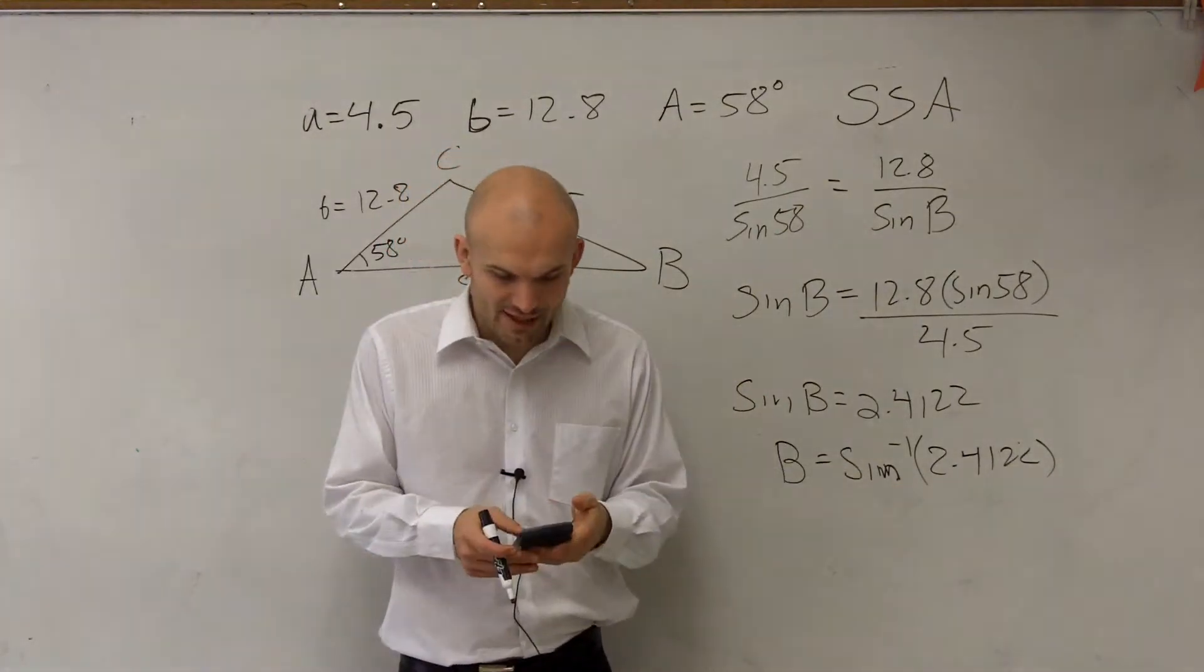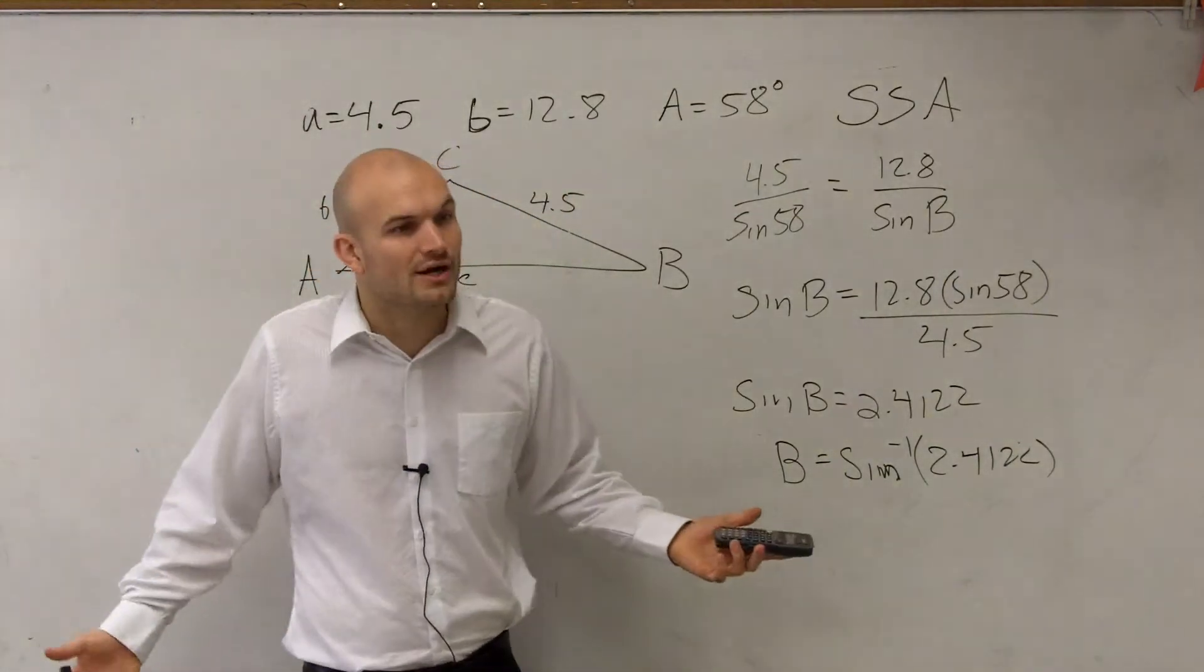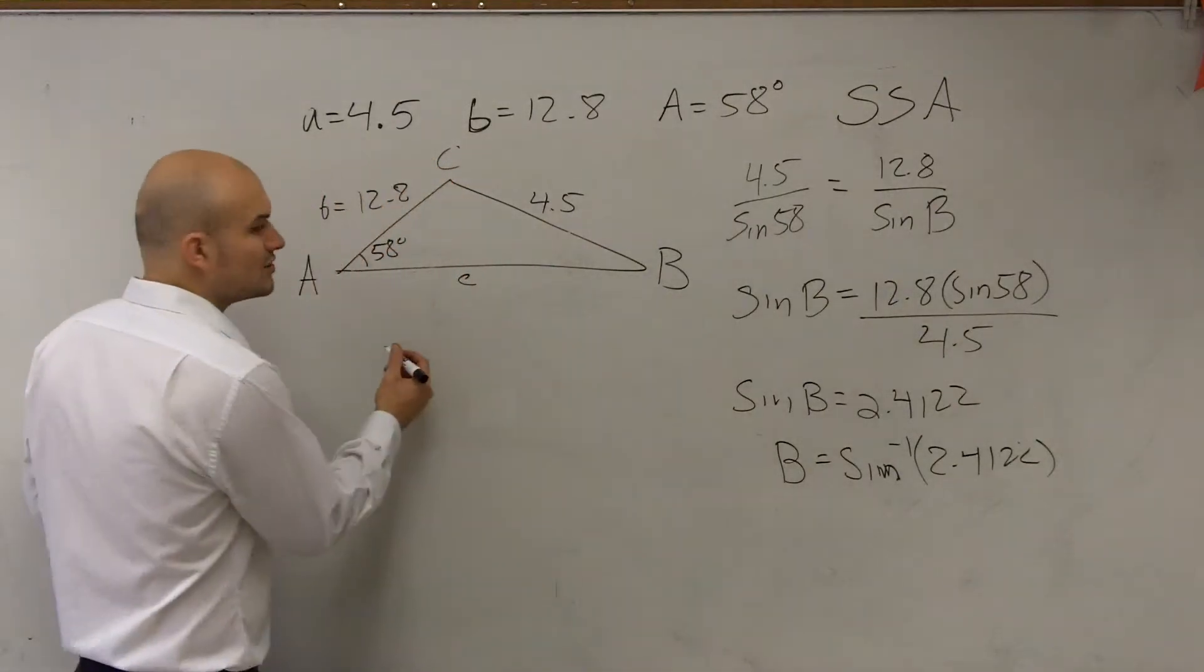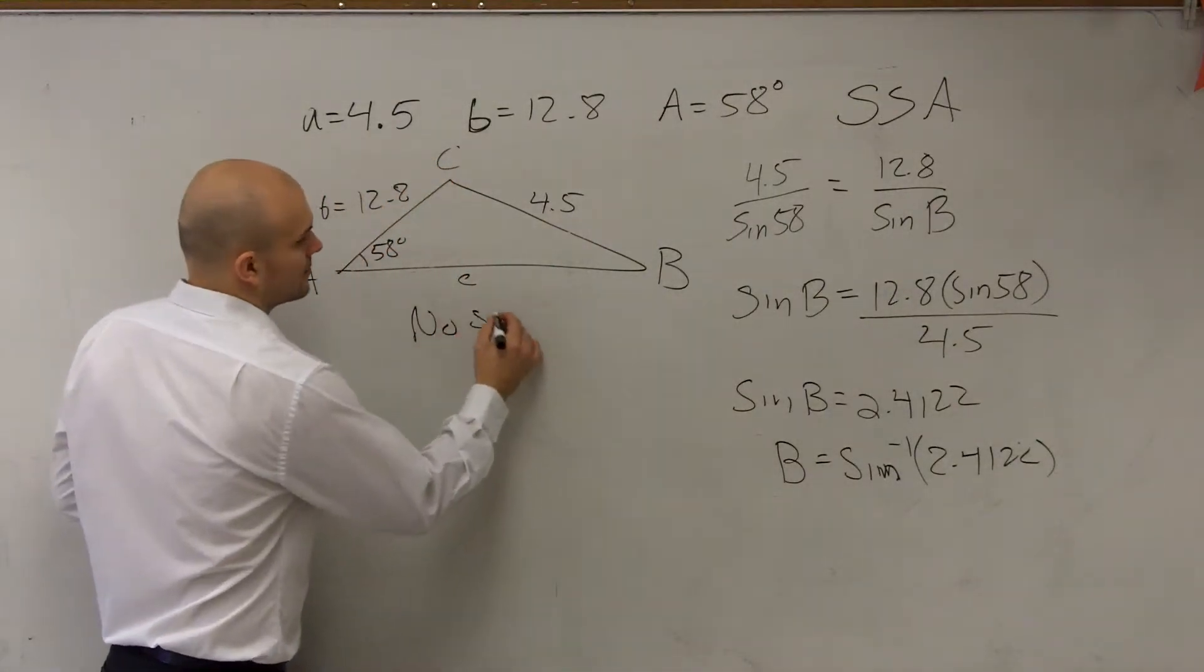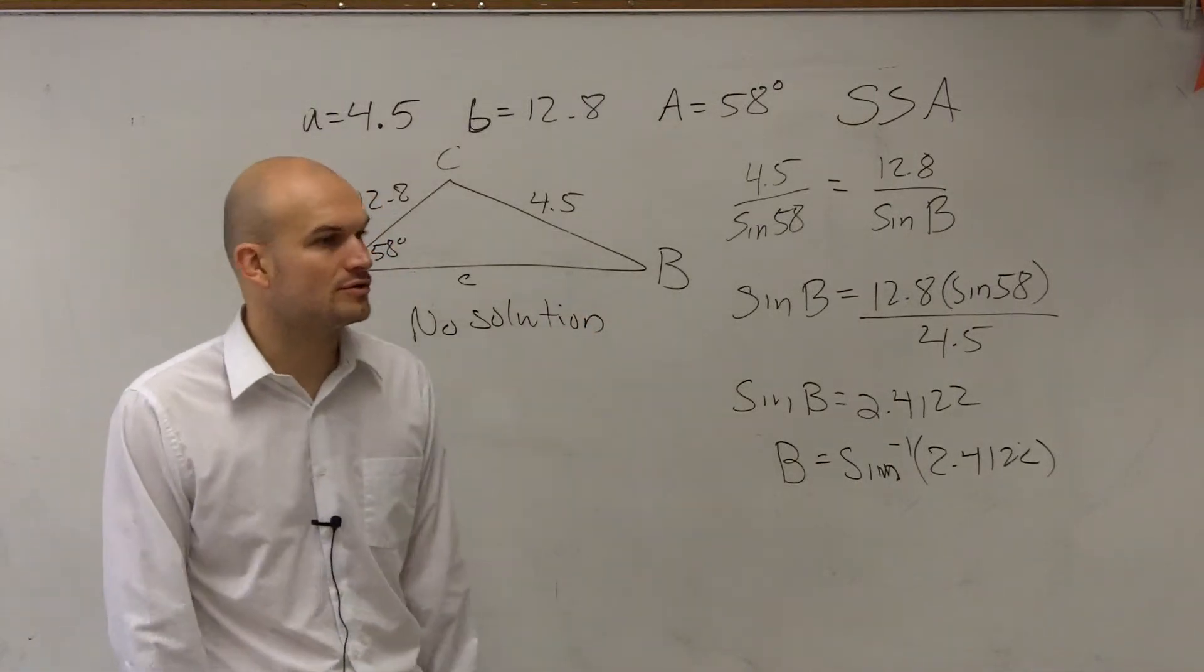So can we take the inverse of 2.4? No. And if you plug that into your calculator, if you do inverse sine of 2.4, you're going to get an error. So, therefore, this triangle cannot be constructed. So, no triangle can be formed. You can just write no solution.